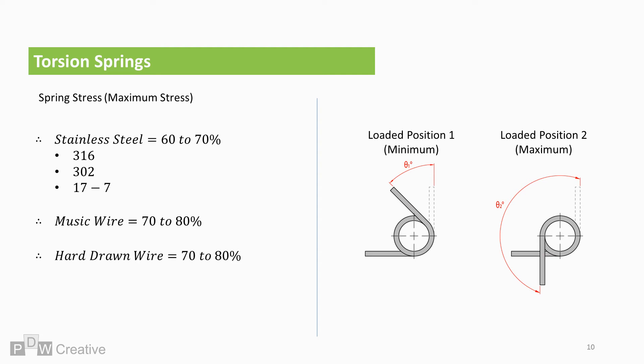Hard drawn wire is similar to music wire but tends to have a lower tensile limit. It performs similarly in terms of percentage loading.